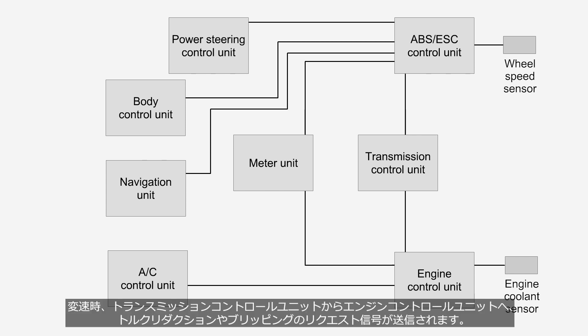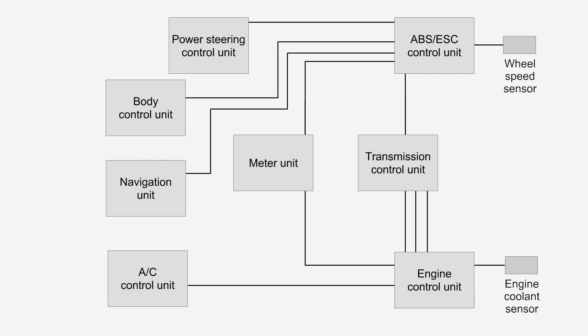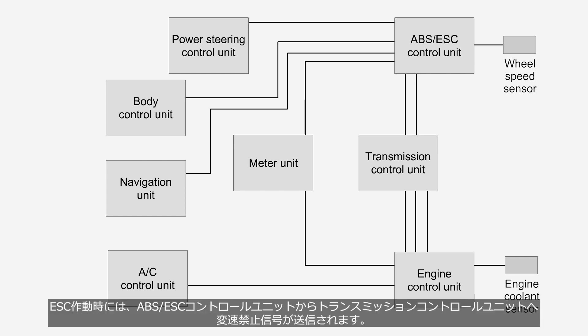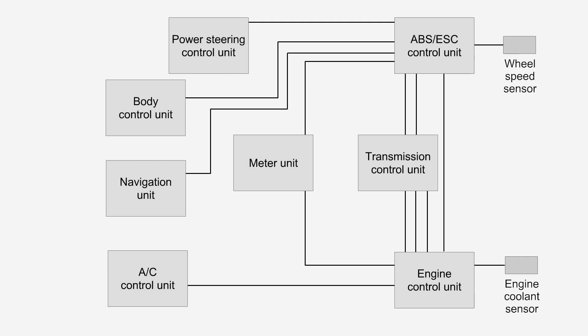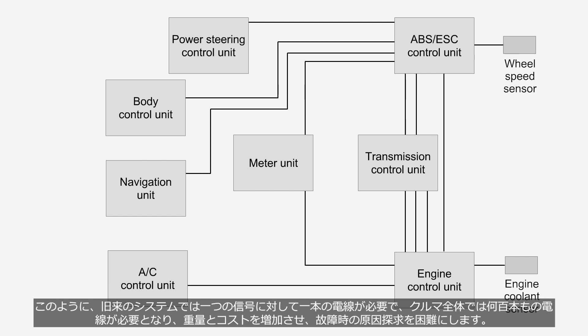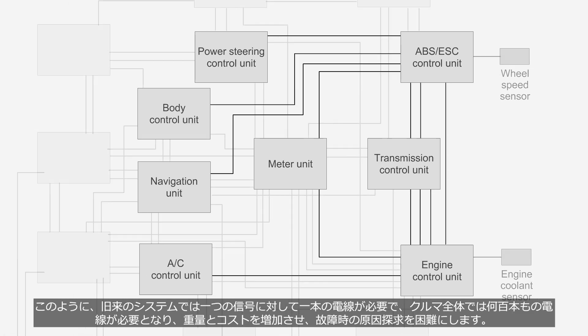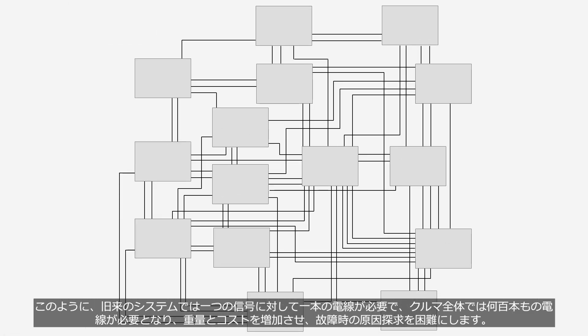When the transmission shifts gear, torque reduction or blipping request signals are transmitted from the transmission control unit to the engine control unit. When ESC operates, a gear change prohibition signal is transmitted from the ABS-ESC control unit to the transmission control unit. When traction control operates, a torque reduction request signal is transmitted from the ABS-ESC control unit to the engine control unit. In this way, the system requires one dedicated wire for each signal, resulting in the need for hundreds of wires throughout the vehicle. This increases weight and cost, and makes troubleshooting challenging.